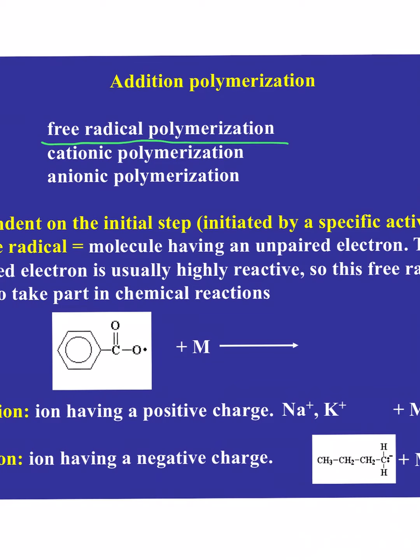That's why free radical polymerization is such an effective technique — you generate this species that is just desperate to find something to react with. This is also why purity is so important in these systems, because if you have a molecule of oxygen kicking around in the reactor, it'll react with that as well, which is not going to give you a polymer. Ideally, it can only find other monomers to react with.